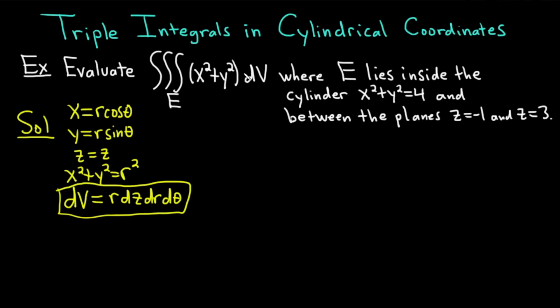Okay, now we're ready to rewrite our triple integral. Let's do that. We have the triple integral. So instead of x squared plus y squared, we're going to replace that with r squared. And then instead of dV, we're going to replace it with r dz dr d theta.